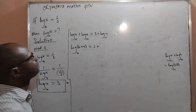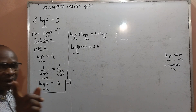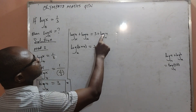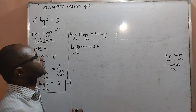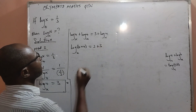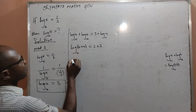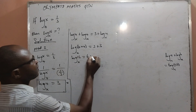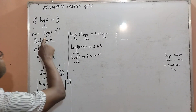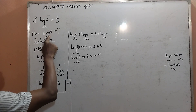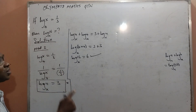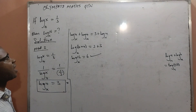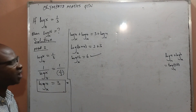From earlier we got that log 4 base x is equal to 3, so I am going to replace it with 3 on the right hand side. And 4 times 4 is 16, so log 16 base x equals 3 plus 3, which is 6. So log 16 base x is equal to 6. That is the final answer using method 1.